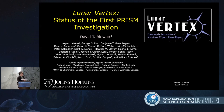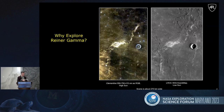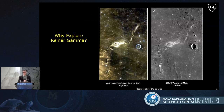Lunar Vertex is targeted to Reiner Gamma. I'll just spend a minute or two here describing why we would want to go to this beautiful and mysterious feature on the lunar near side.